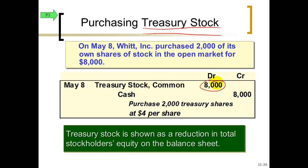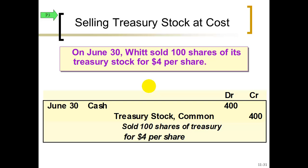Treasury stock goes in not at par value but at the cost you paid, and of course cash is credited. So the treasury stock account goes in at cost, and when you eventually sell it, it comes out at that same cost per share. Here we sell 100 of the 400 shares previously bought at a price equal to our cost, so the cash collected and the treasury stock removed are both at the same $4 per share cost — no gain or loss. In fact, gains or losses on a company selling its own stock are not reported; there is no gain or loss recorded.